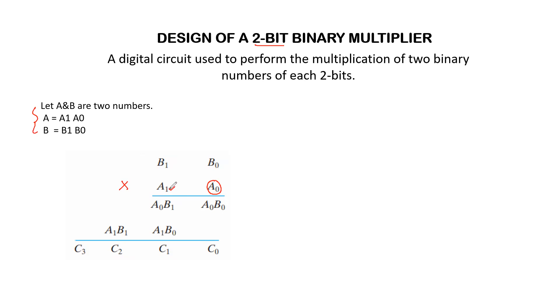Next, multiplying with A1: A1 B0 and A1 B1. This gives the first partial product and the second partial product. We should add these two partial products to find the final product.